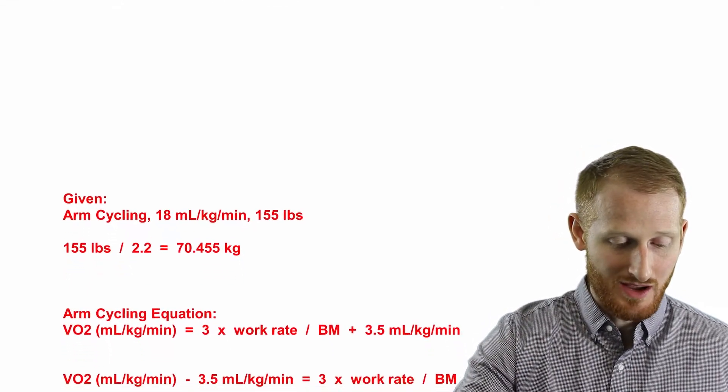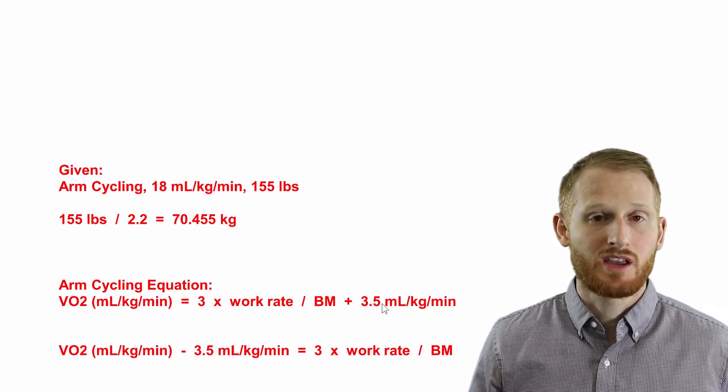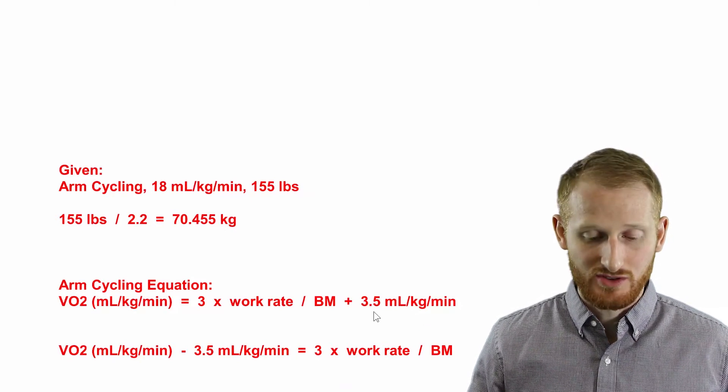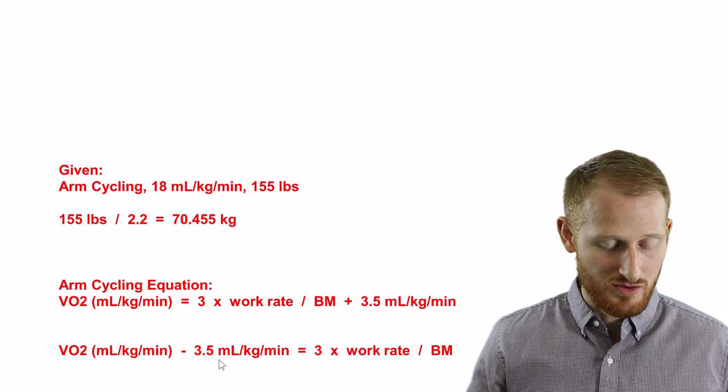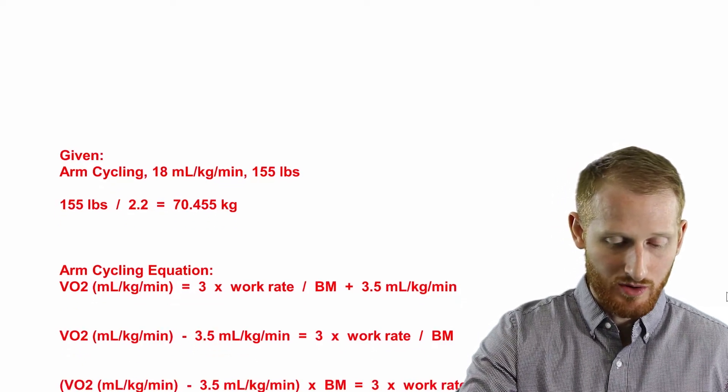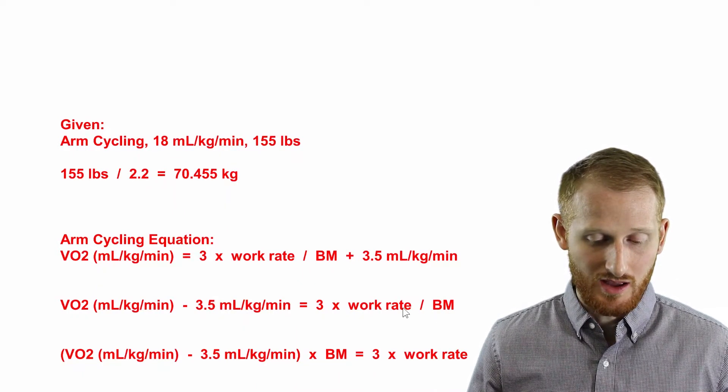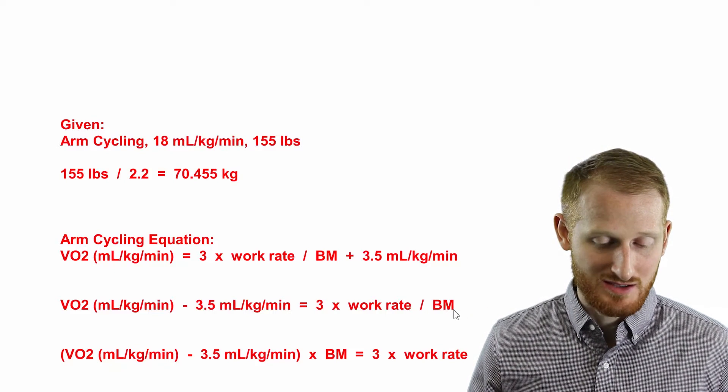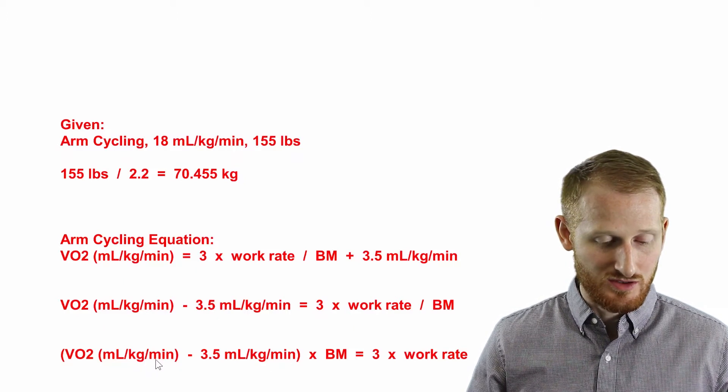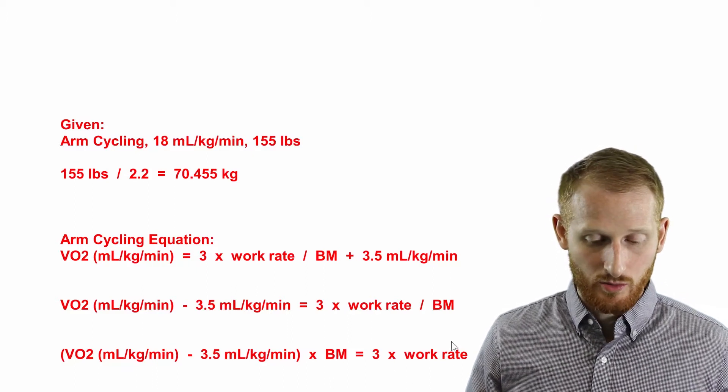So let's do this step by step. The first step I'm going to do is I'm going to subtract 3.5 mLs per kg per minute from both sides of the equation, which essentially shifts this across the equal sign to the other side and reverses the operation. So we end up with VO2 minus 3.5 and we don't have this 3.5 on the other side. The next thing I'm going to do is I'm going to move the body mass to the other side of the equation as well. So over here work rate is being divided by body mass, so I'm going to multiply body mass on this side, canceling this out, and multiply body mass on this side, which gives us what we have here. So the VO2 minus the 3.5 times, now it's multiplication, the body mass. All right, we're almost there.